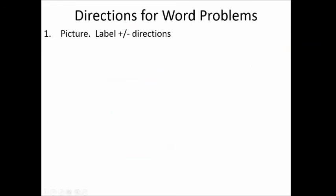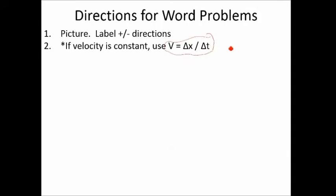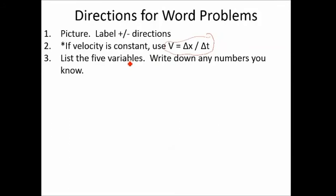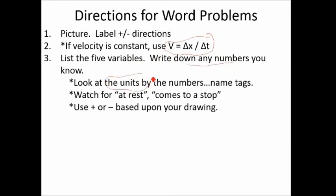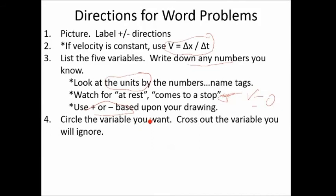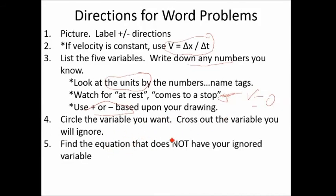Here's the general strategy: draw a picture and label plus and minus. If velocity is constant, use the simple equation. If not, list the five variables and fill in what you know — use units as clues (m/s = velocity, m/s² = acceleration, seconds = time). Watch for code words like 'at rest' or 'stops,' which mean a velocity is zero. Circle the variable you want, cross out the one you're ignoring, then find the equation missing that ignored variable.